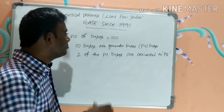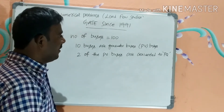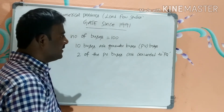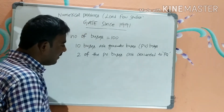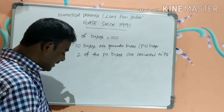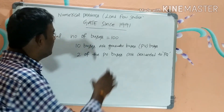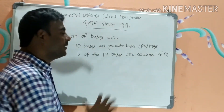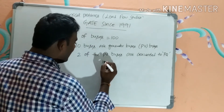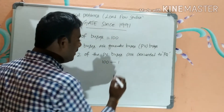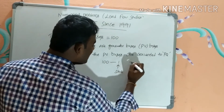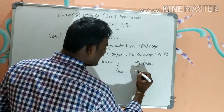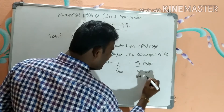In a 100-bus system, one bus is the slack bus, leaving 99 buses for load flow analysis. Out of these 99 buses, 10 are PV buses, so the remaining 89 buses are PQ buses.